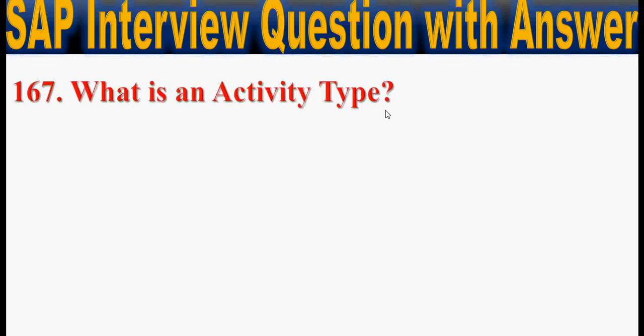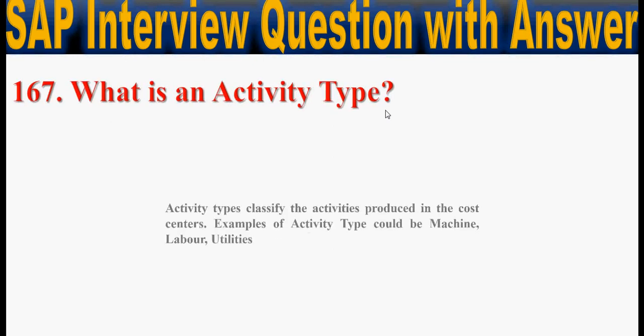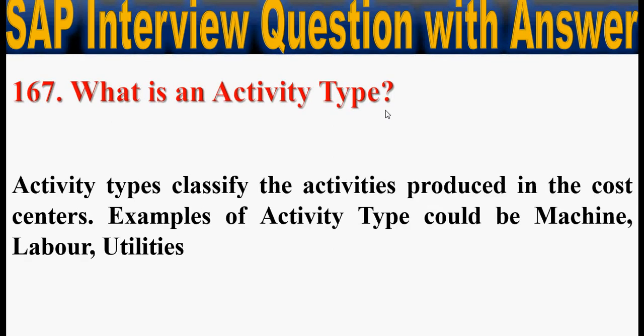Next, what is an activity type? Activity types classify the activities produced in the cost center. Examples of activity types could be machine, labor, utilities, etc.